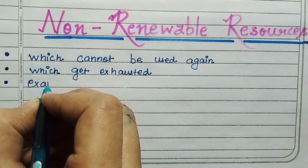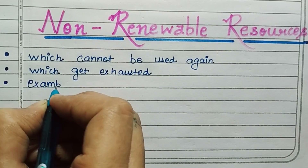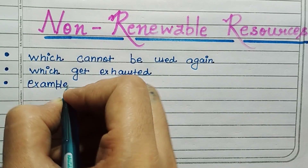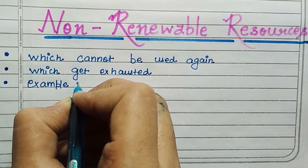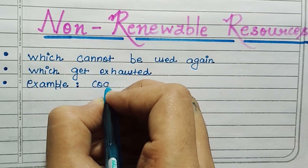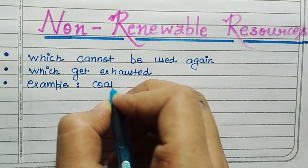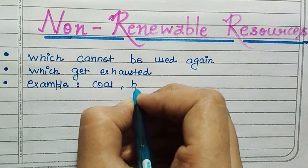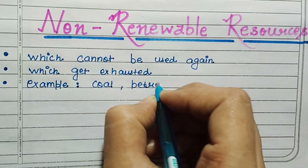These are the resources which cannot be used again, which can get exhausted. For example: coal, petroleum, and minerals.